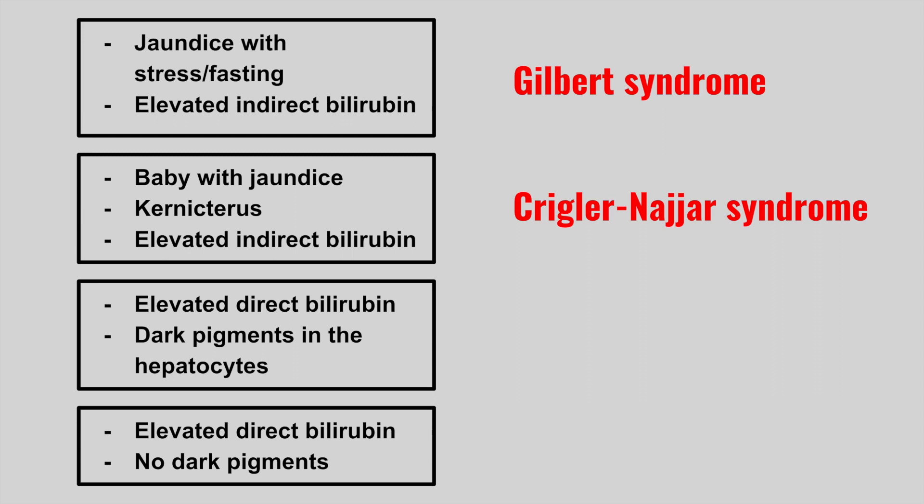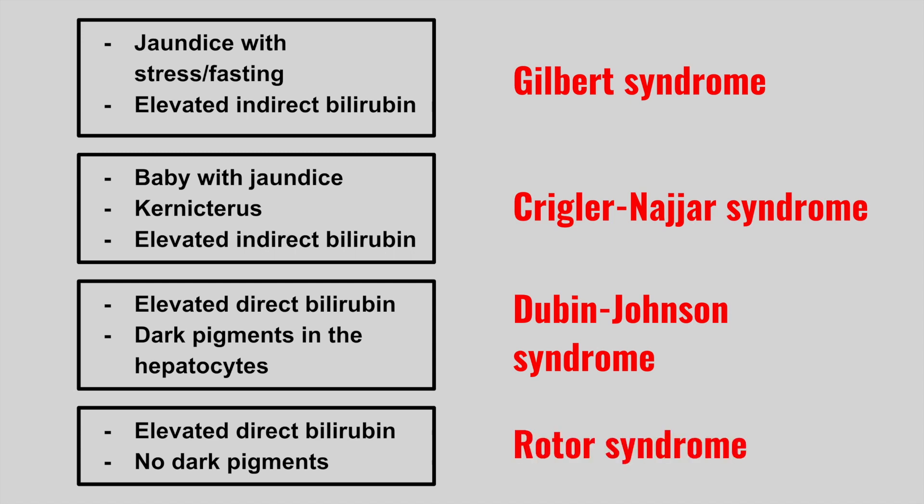The next patient has an elevated direct bilirubin and dark pigments in the hepatocytes. This is Dubin-Johnson syndrome — Dubin and dark both start with a D, which is how to remember it. The next patient also has elevated direct bilirubin but no dark pigments in the liver. This is Rotor syndrome.